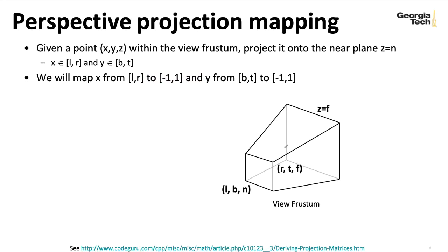So we're going to take objects in this space and project them onto this near plane. And once they're on the near plane, we'll map left to right to minus 1 to 1 and bottom and top to minus 1 to 1, just as we did with orthographic projection.